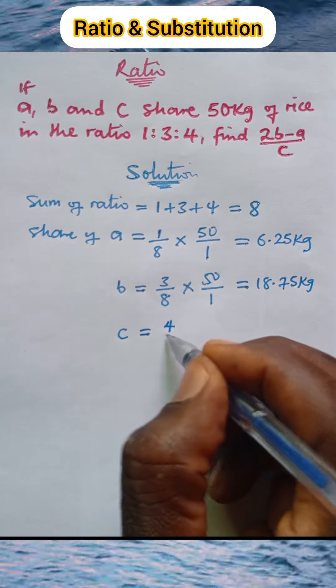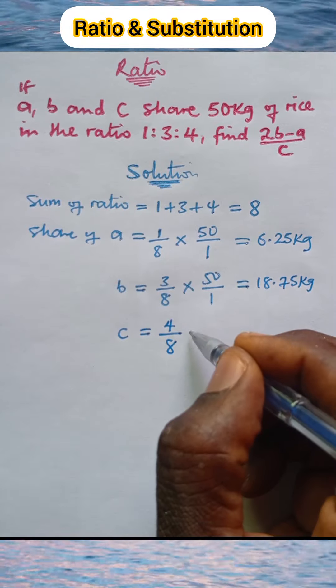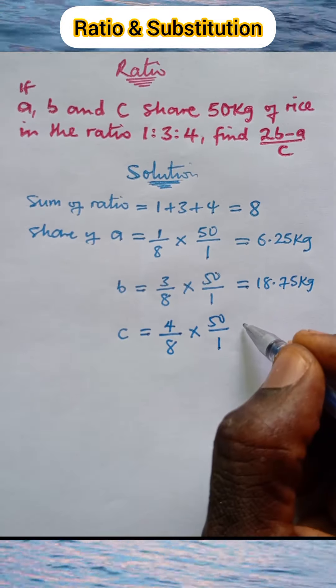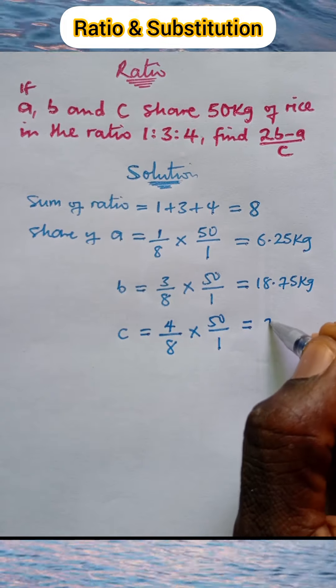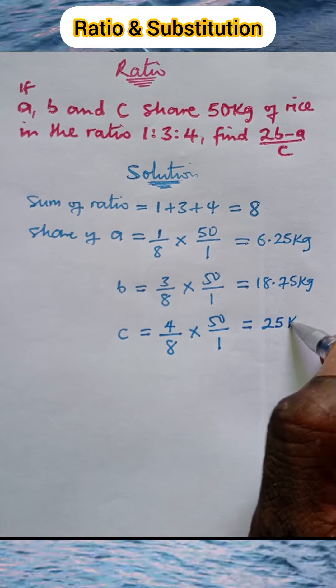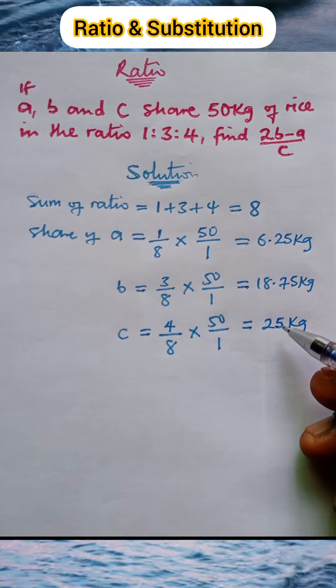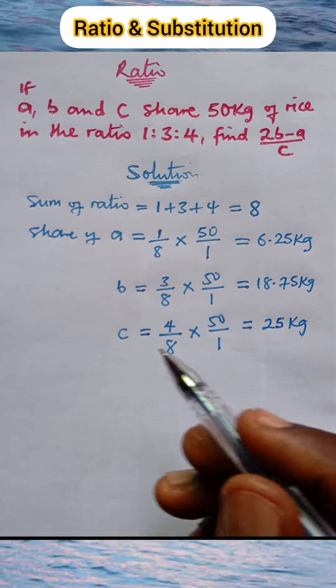The share that goes to c is 4 over the sum of the ratio, multiplied by the amount of rice over 1. This gives us 25 kilograms of rice. So these are the quantities of rice received by a, b,